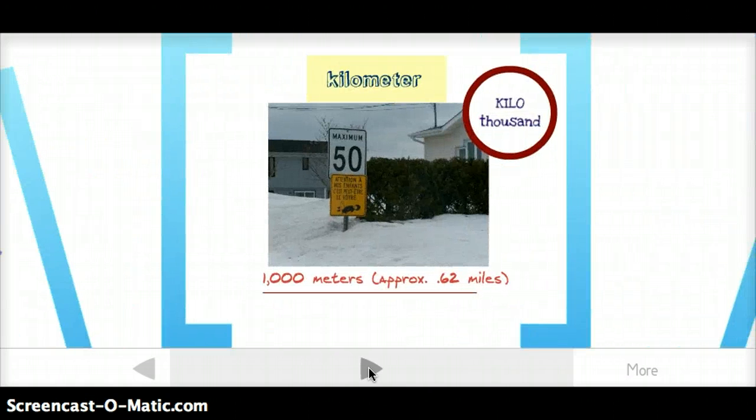A kilometer, kilo means thousand, and meter means measure. So kilometer is just a thousand meters, or about 0.62 miles. If you've ever traveled abroad and seen speed limit signs and thought, wow, that's really fast. Like this one, 50 kilometers an hour for an area where children play, it's because of course a kilometer isn't as far as a mile, and so 50 kilometers an hour isn't as fast as 50 miles an hour.